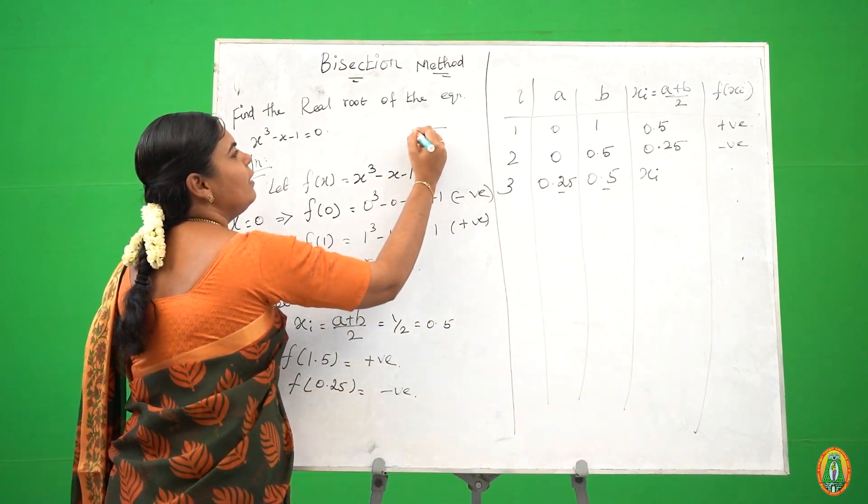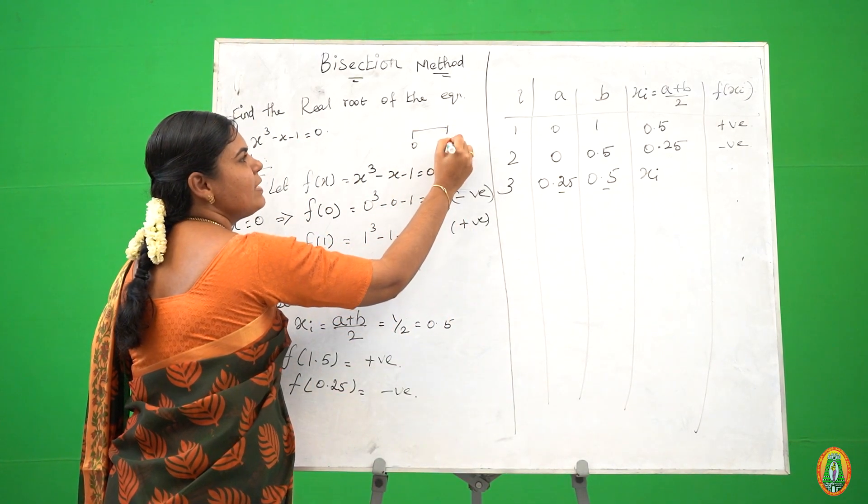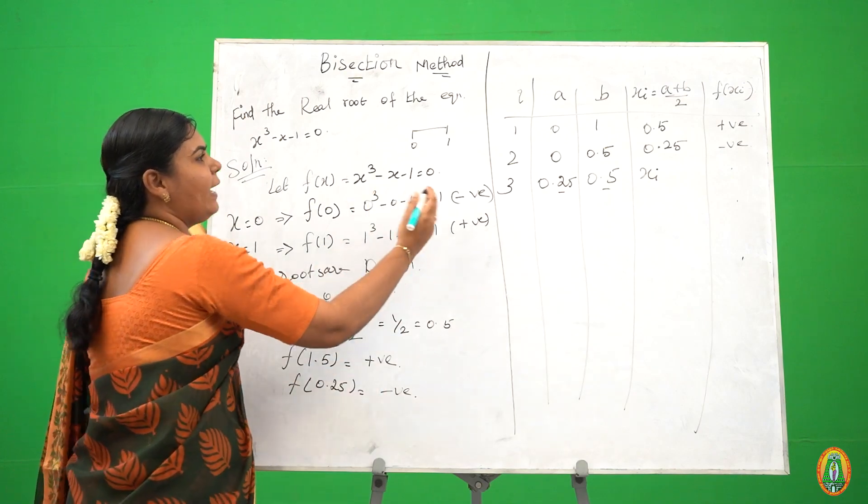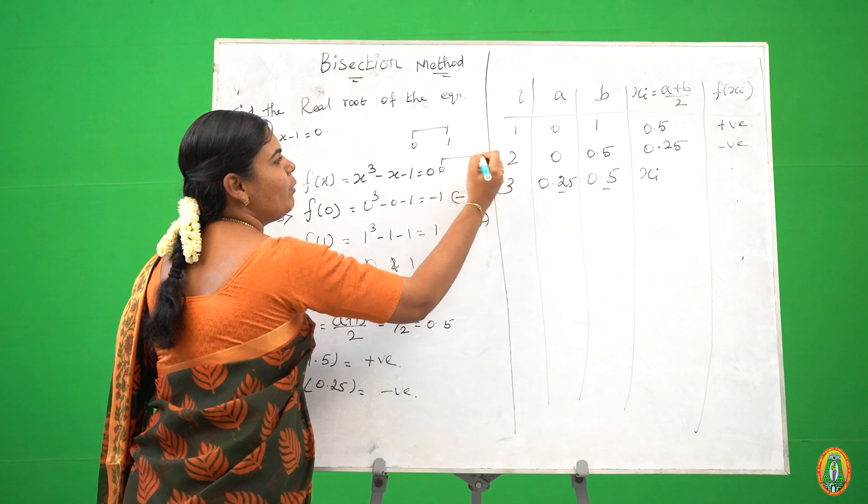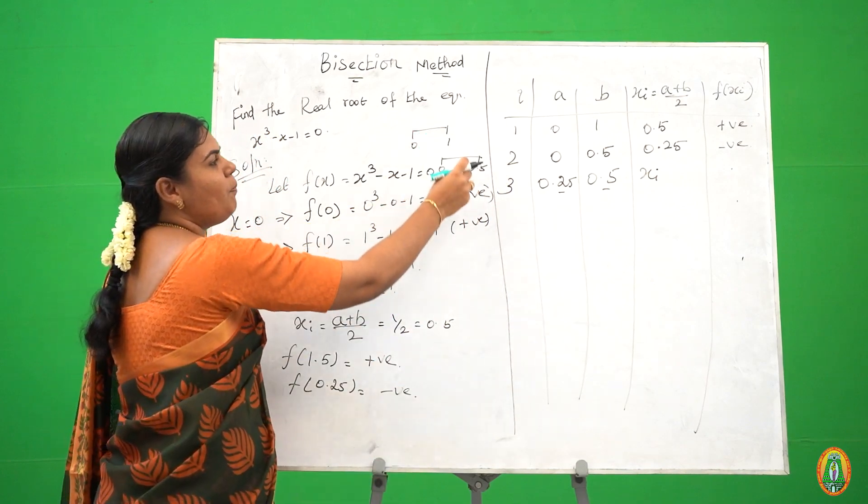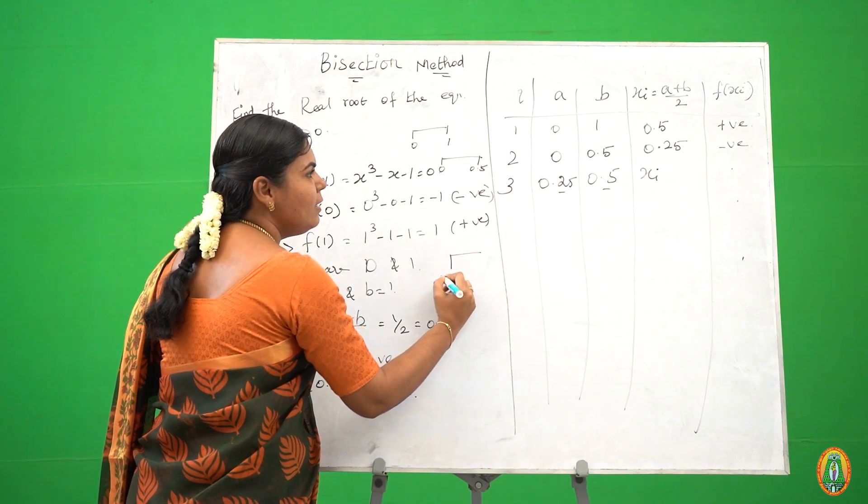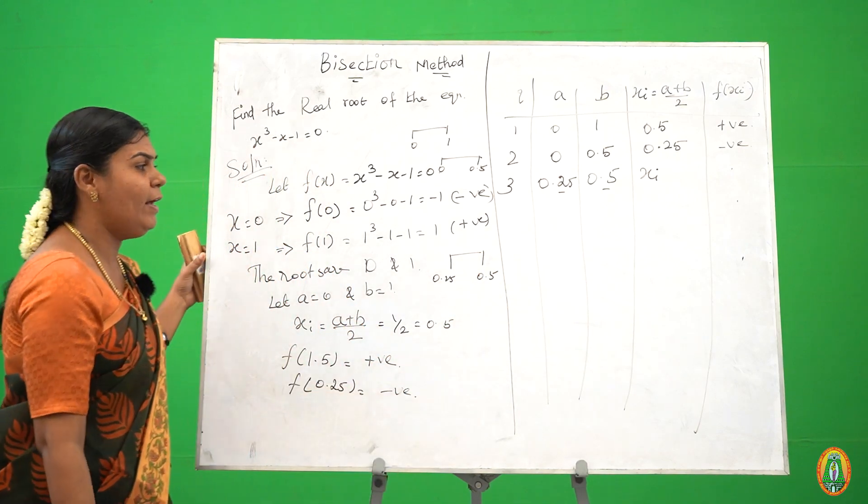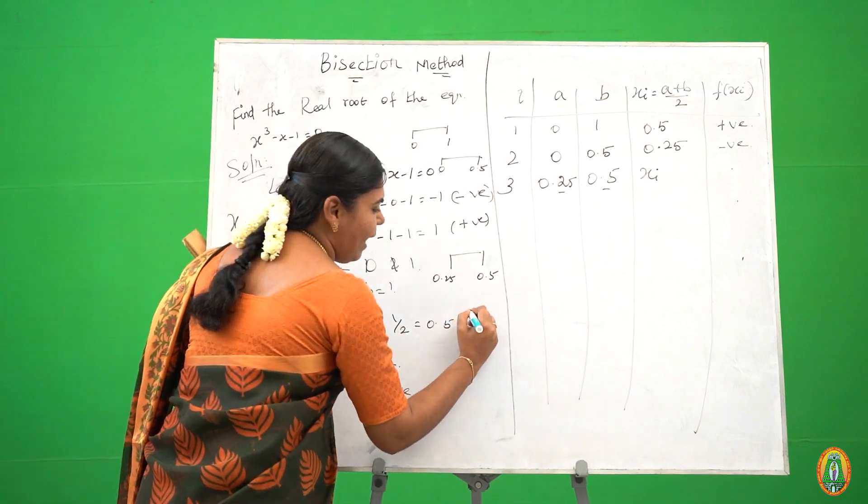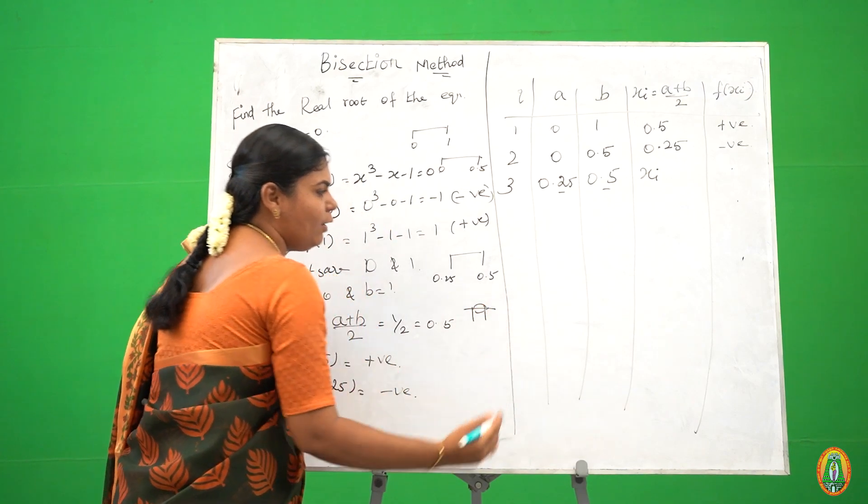Suppose your interval is 0.1. First interval is 0 to 1. Second interval is 0.5. Third interval is 0.25. We got an accuracy value.